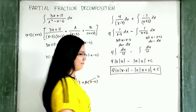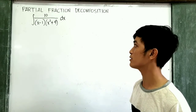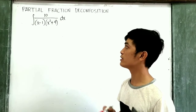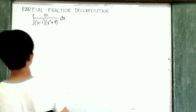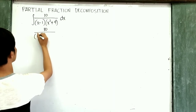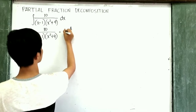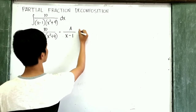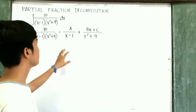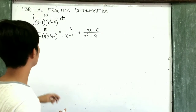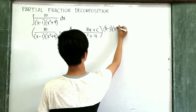So this is our final answer for the first problem. For our next problem, let's solve the integral of 10 over (x - 1)(x² + 9) dx. This time, we will encounter a linear and quadratic factor. Our first step is to decompose this equation: A over (x - 1) for the linear factor, and (Dx + C) over (x² + 9) for the quadratic factor. After this, let's multiply both sides by (x - 1)(x² + 9).